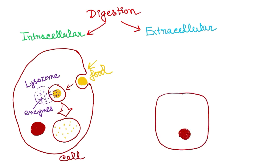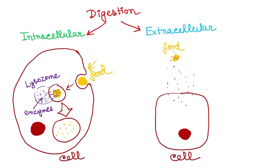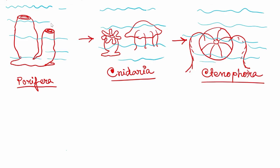In extracellular digestion, the digestion happens outside the cell. The cells release the enzyme out of the cell and the food is broken down outside the cell.